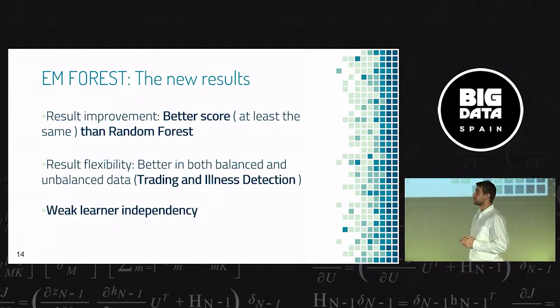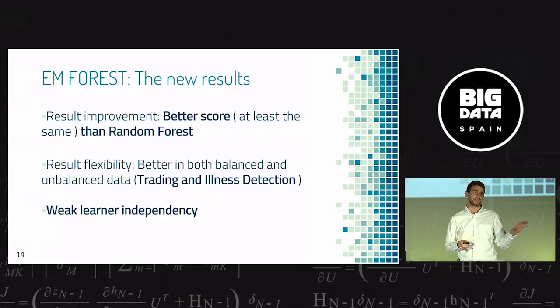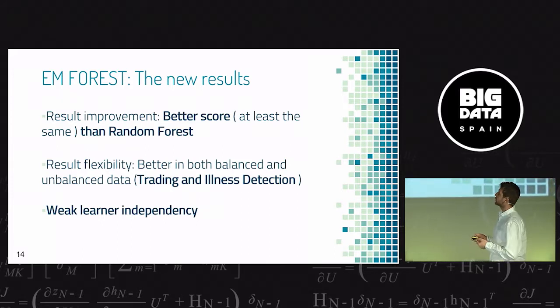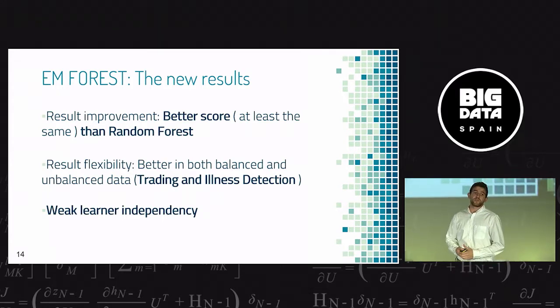So what have we obtained? We have obtained a better score than random forest. Why? Because if the optimum point is the majority vote, you will obtain it with this method and with random forest. But if it's not, you will obtain it with this new method and random forest not. Also, we will obtain more result flexibility. We can force the trees to stay in trading problem or in illness detection problem. And we have weak learner independence. That means it's not necessary to use trees. We can use any algorithm that we want to apply to this technique.